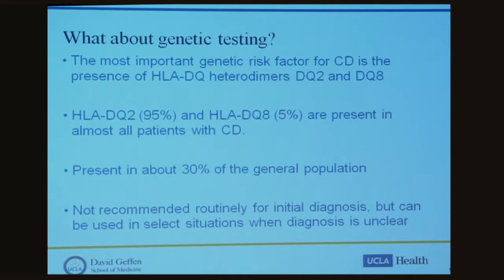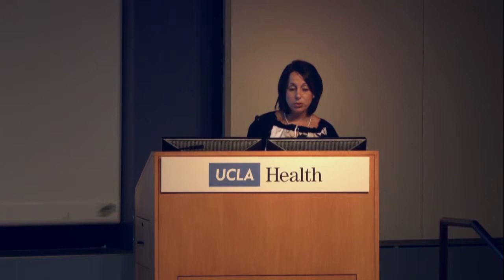Regarding genetic testing, the most important genetic risk factor for celiac disease is the presence of HLA-DQ heterodimers DQ2 and DQ8. In patients with celiac disease, one or the other is almost always present, so a negative test almost certainly rules out celiac disease. However, these heterodimers are also present in about 30 percent of the general population, so genetic testing is not recommended routinely for initial diagnosis but can be used in select situations when the diagnosis is unclear.